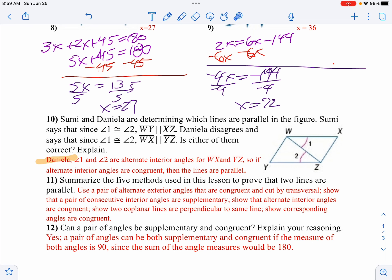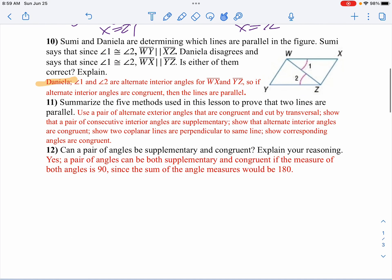On number 11, we want to summarize the five ways to show lines are parallel. So we have, we can use a pair of alternate exterior angles being congruent. We can do the same side interior angles being supplementary. We can do the alternate interior angles being congruent. And we can show the lines are perpendicular.